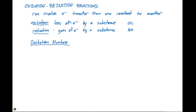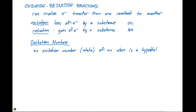These oxidation numbers are going to allow us to come up with rules to keep track of everything going on. An oxidation number — sometimes referred to as an oxidation state of an atom — is a hypothetical charge assigned using a set of rules.